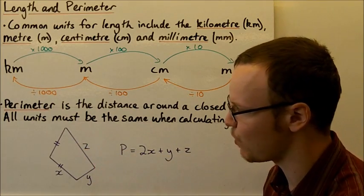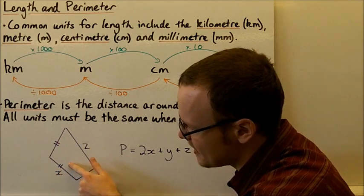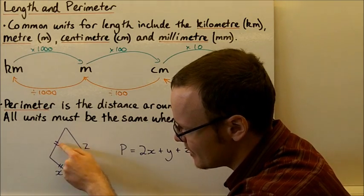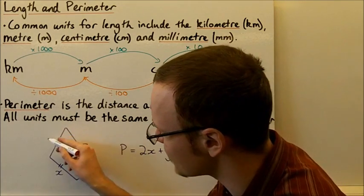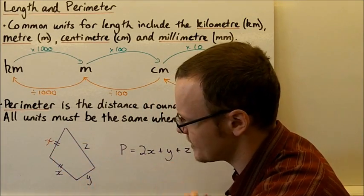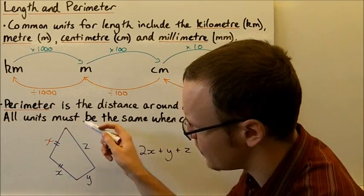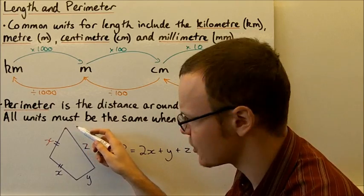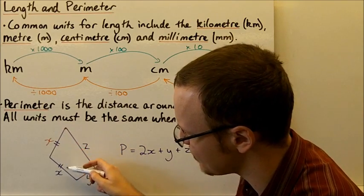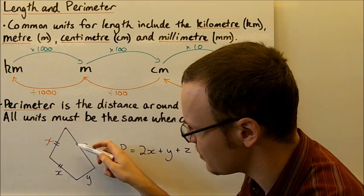Looking at this quadrilateral — a four-sided shape — we've got two sides that are the same, marked with the same number of dashes. Both have two dashes, so that side length must also be x. So we've got x, x, y, and z. To find the perimeter, we start at one point and travel all the way around, adding the values.